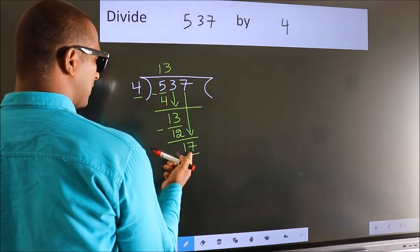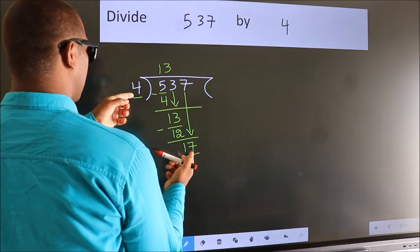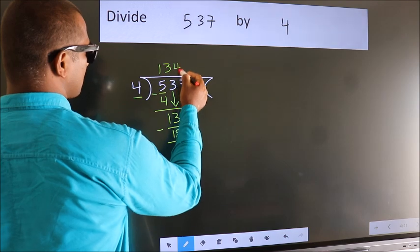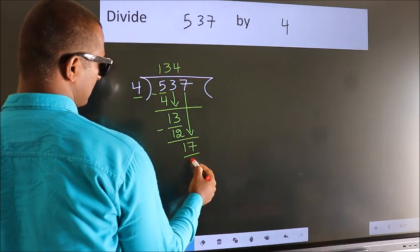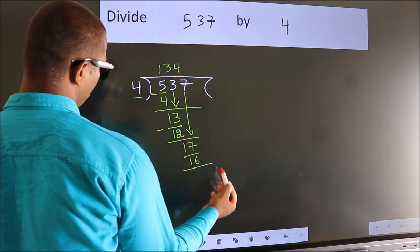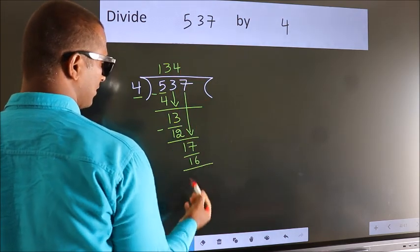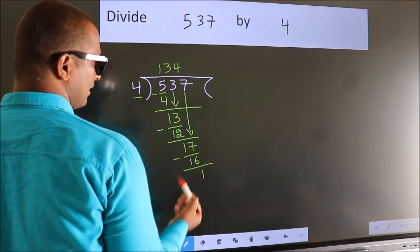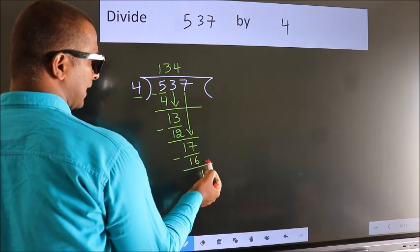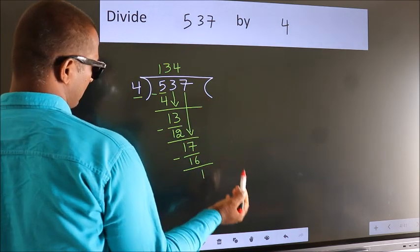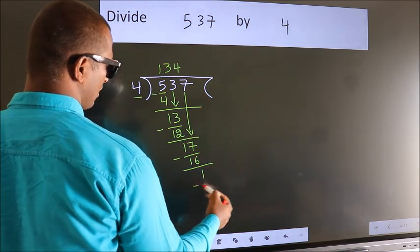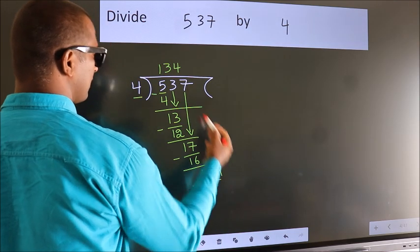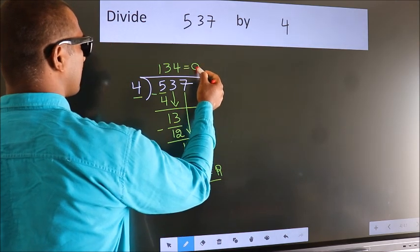A number close to 17 in the 4 table is 4 fours — 16. Now we subtract — we get 1. No more numbers to bring down, so we stop here. This is our remainder. This is our quotient.